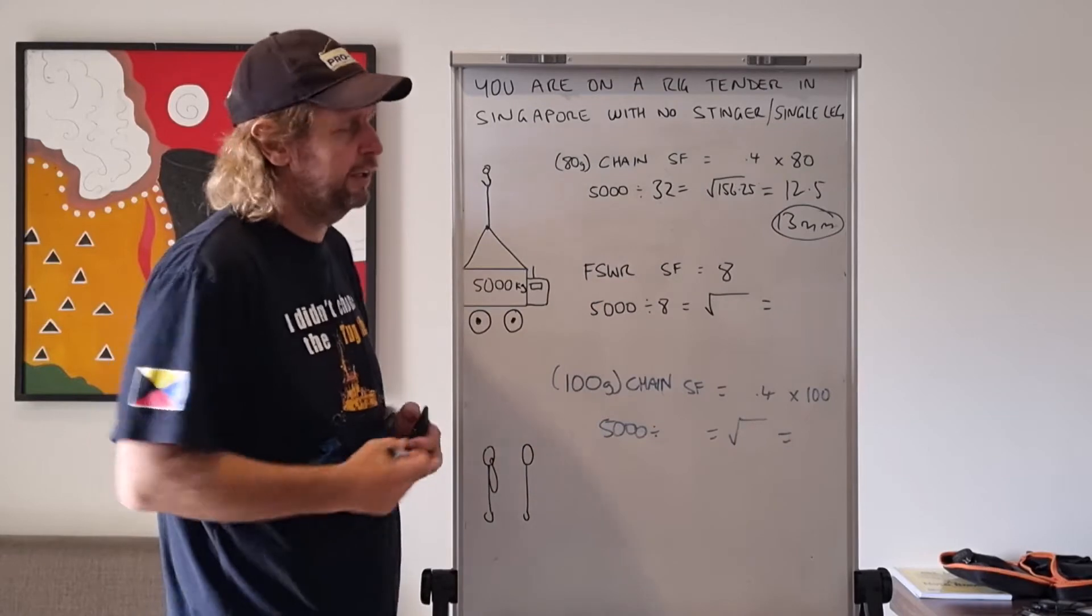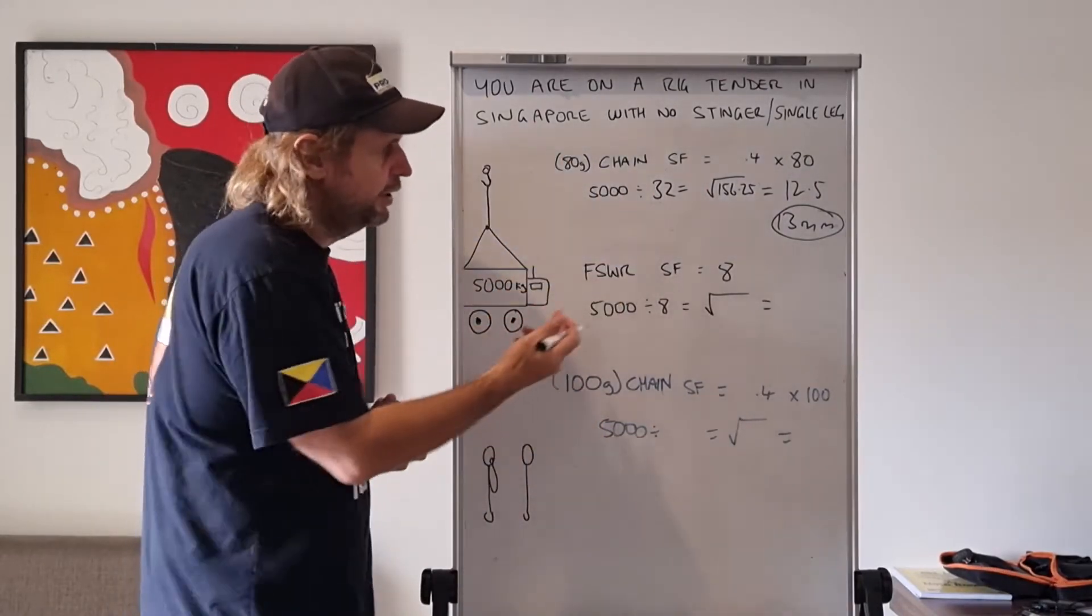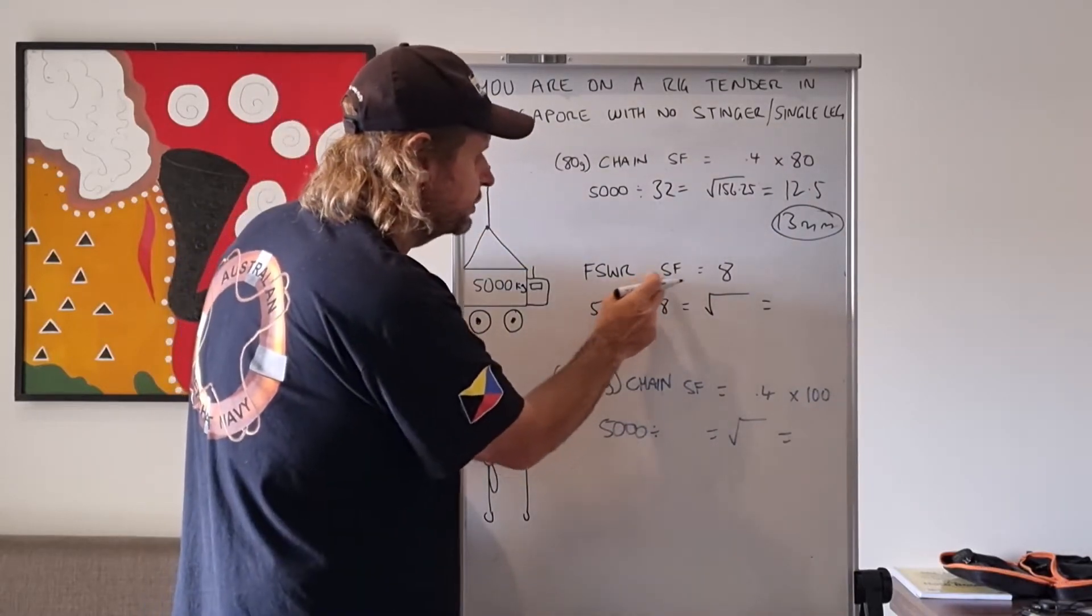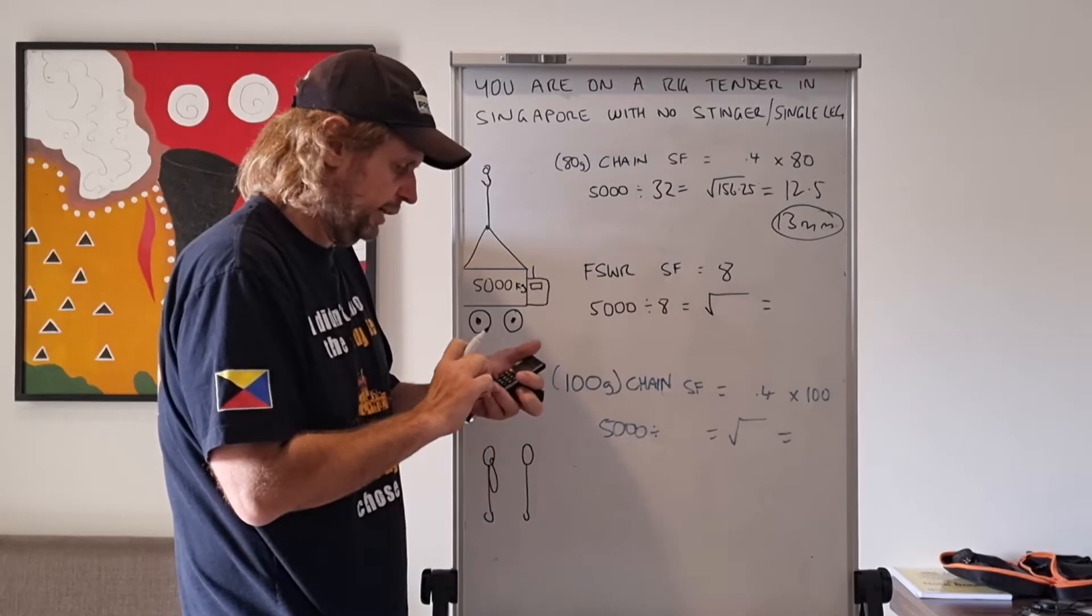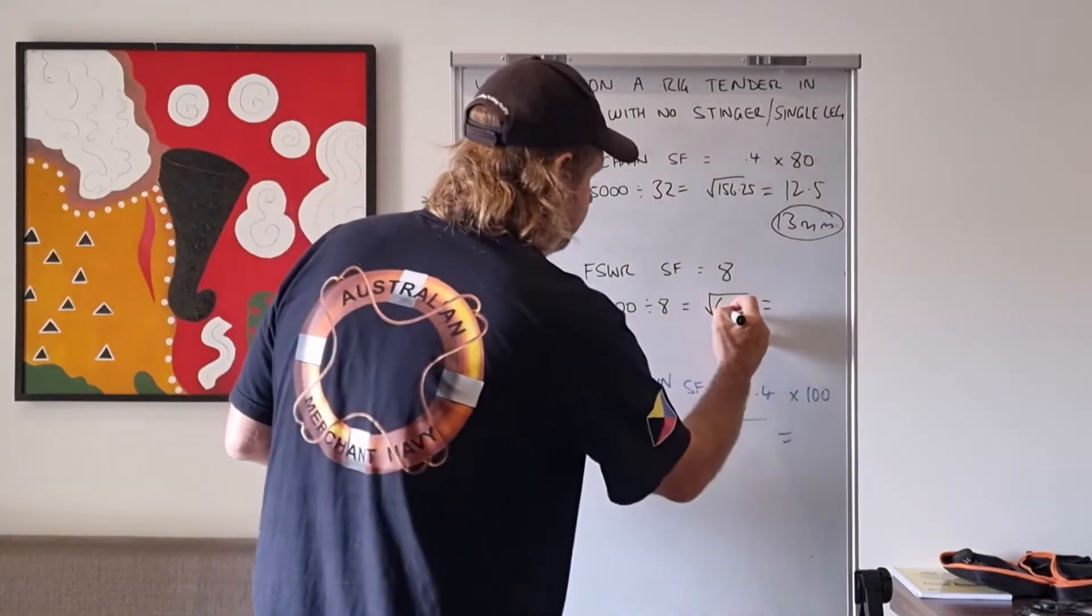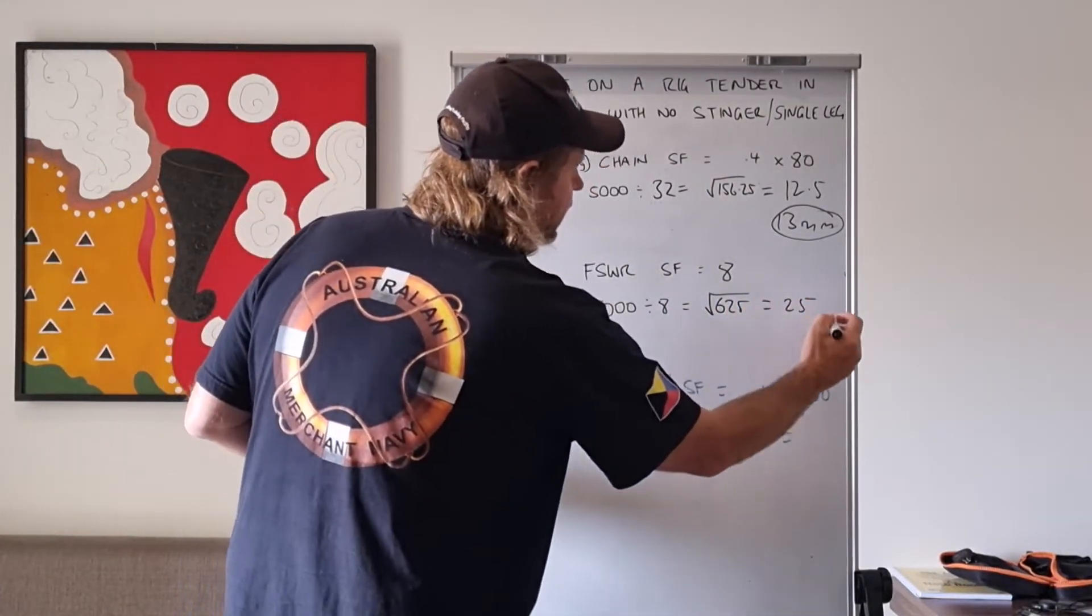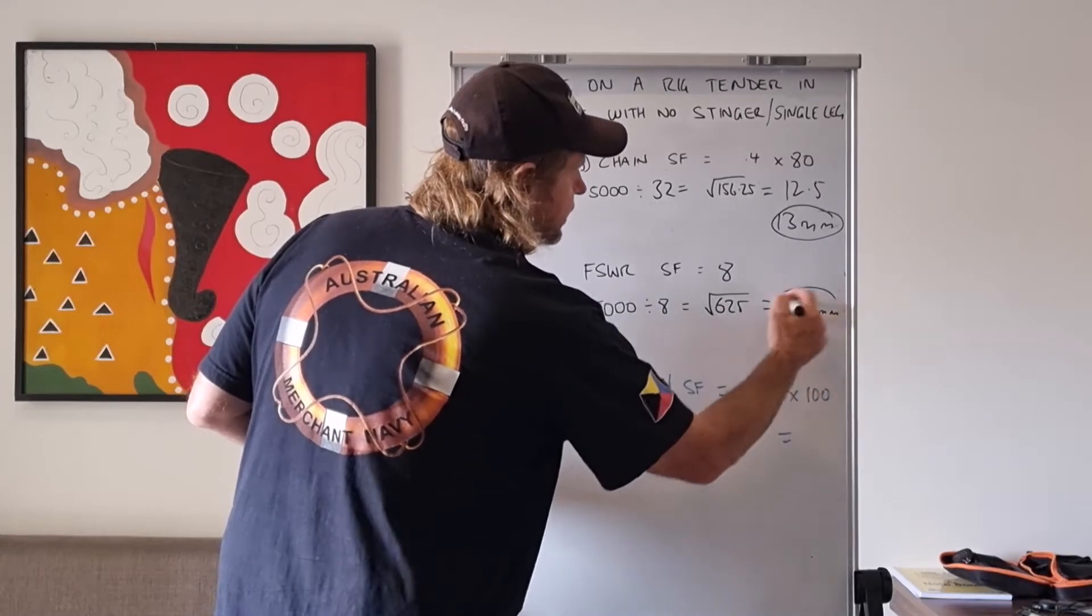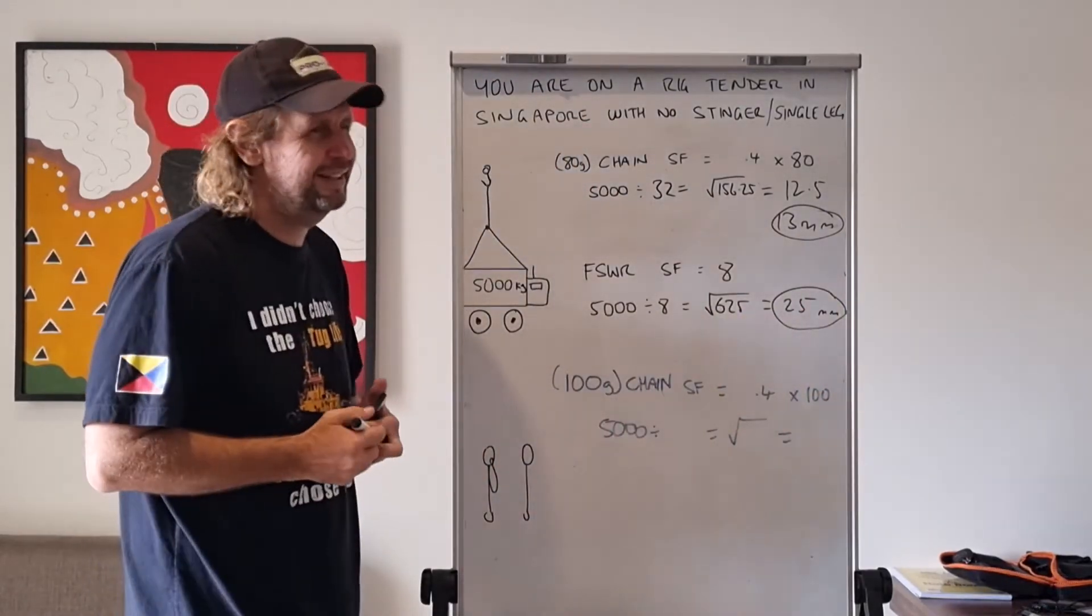Flexible steel wire rope has a safety factor - you don't have to calculate it because it doesn't come in different grades like chain. Flexible steel wire rope safety factor is 8. 5,000 divided by 8 equals 625, and square root of 625 is 25. 25 millimeter - that's quite large flexible steel wire rope. I don't even know if that exists. It'd probably be 26 millimeter.